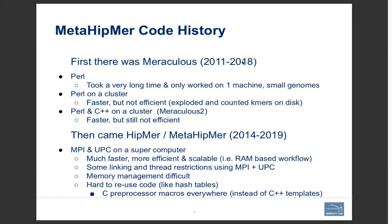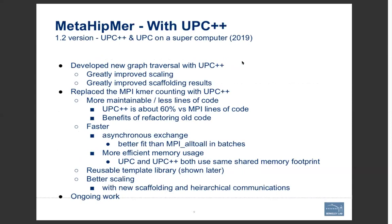Then in 2014, a postdoc named Vangelis Koganis tackled this problem, translating all these Perl algorithms into UPC and MPI to work on supercomputers so we could tackle very large problems that really couldn't be tackled before. This application we call HITMER, or transformed into MetaHITMER to work on metagenomes. It works much faster and is much more scalable than the original Perl, but we had some issues with interoperability between MPI and UPC.